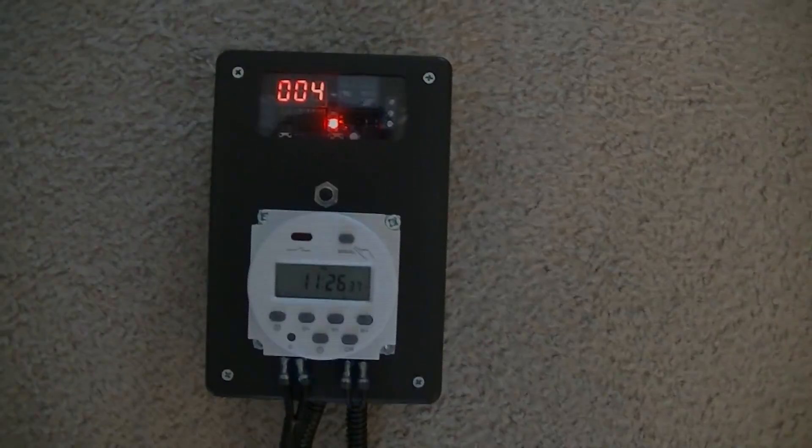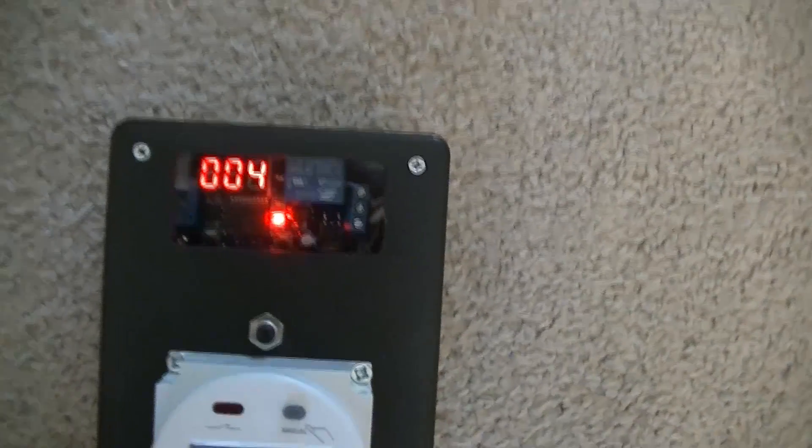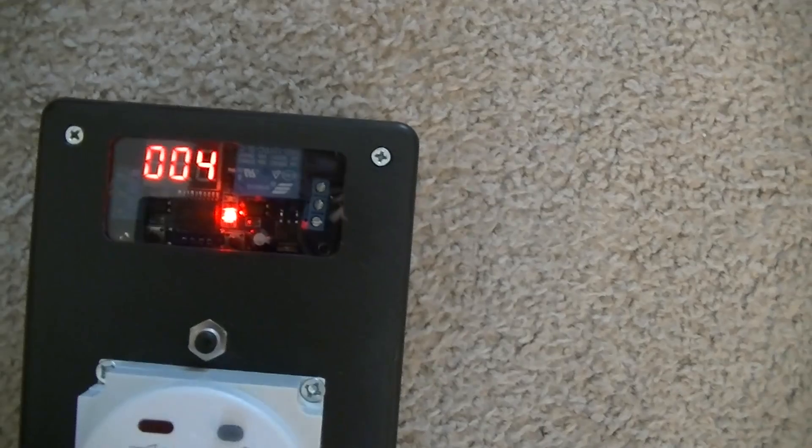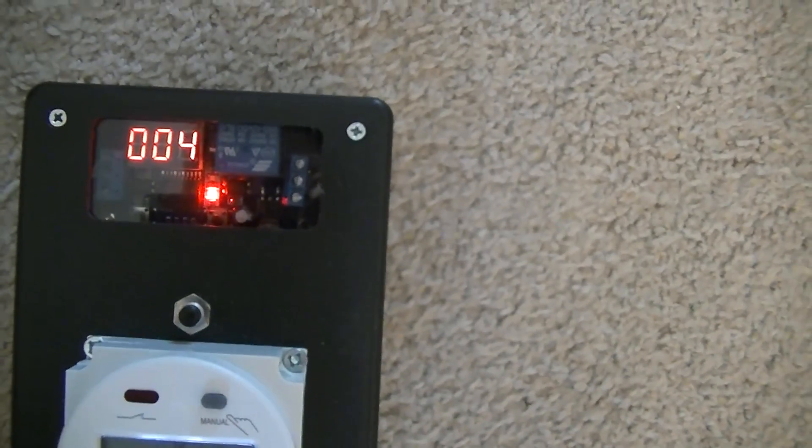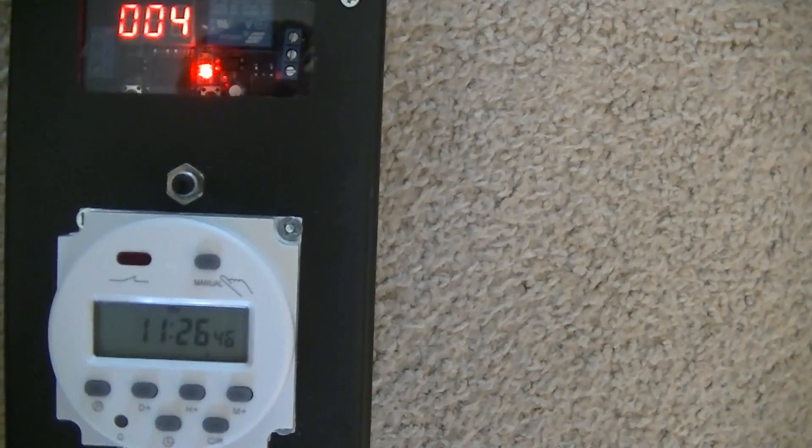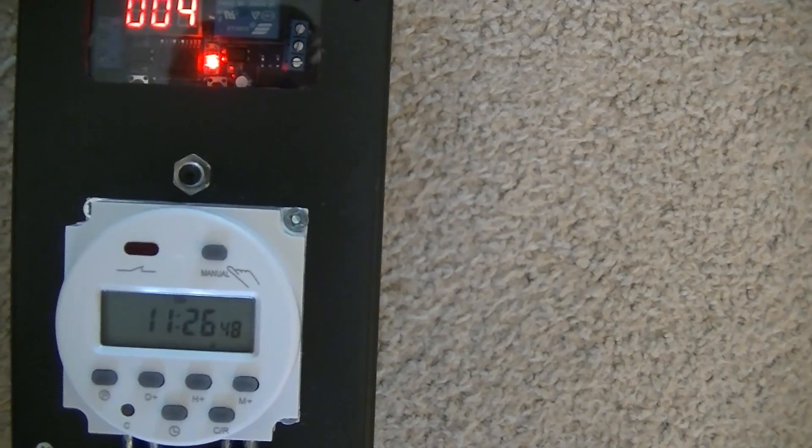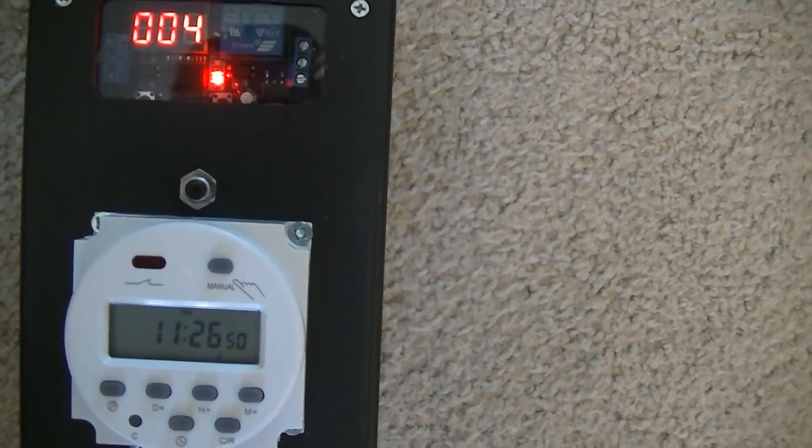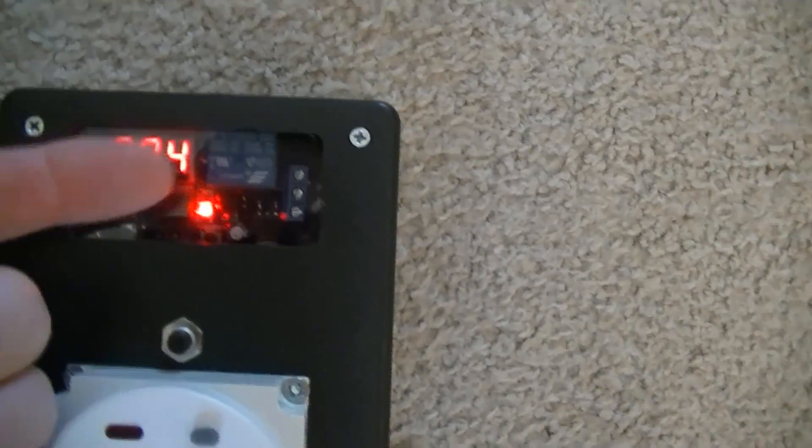So that activates the timer manually. Alright, here's the final assembly. I added a window there so you could see the timer and that it's actually powered. I moved the manual test button down a little bit to make room for the window. That's some acrylic.